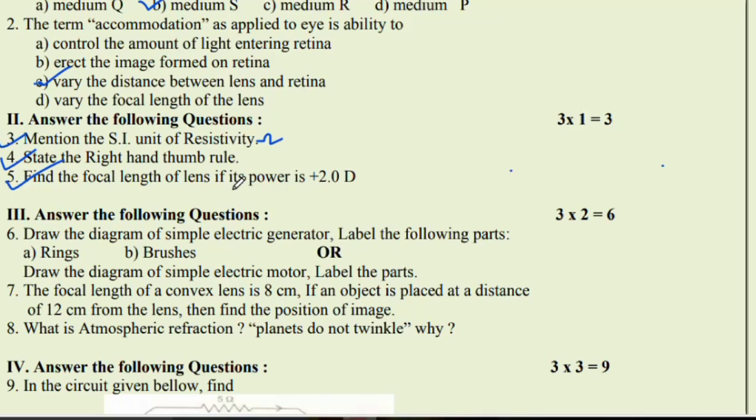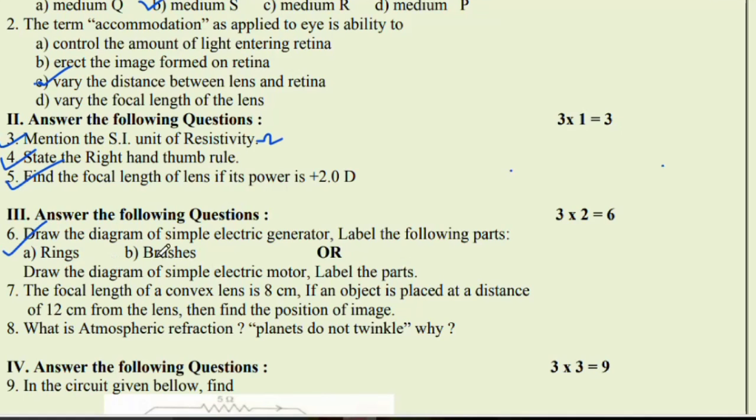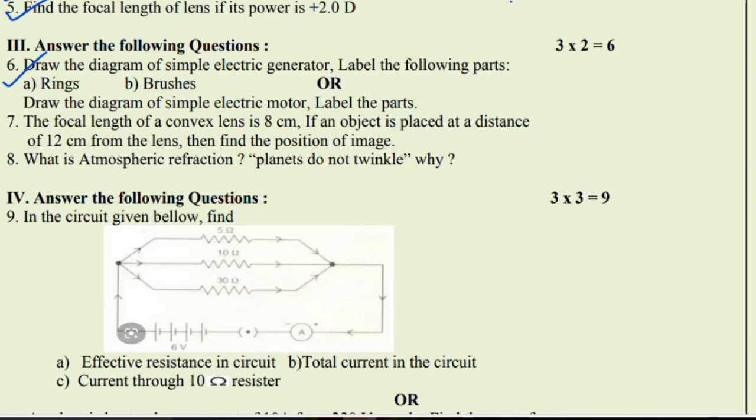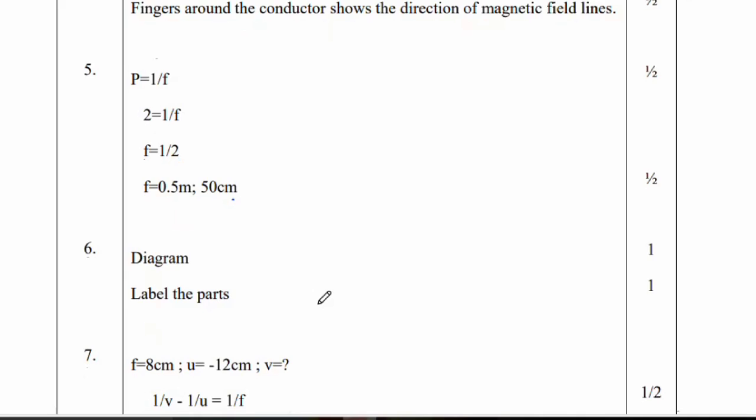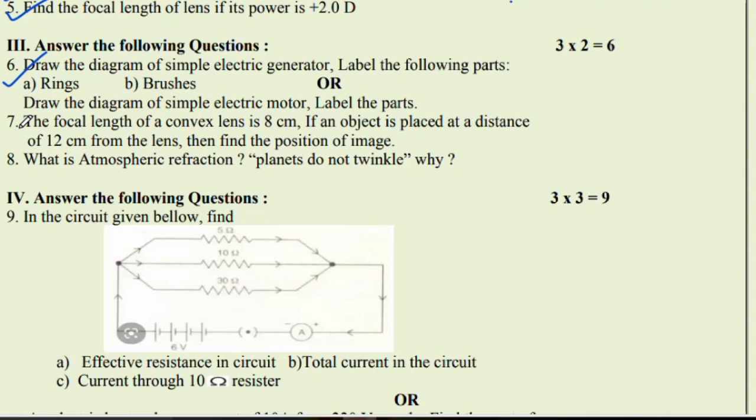Find the focal length of lens if its power is 2 diopters. We have a relation P is equal to 1 by F. So 2 is equal to 1 by F, so F is equal to 0.5 meter. Therefore 50 centimeter is the right answer. Next question number 6, draw the diagram of simple electric generator and label the following parts: brushes, rings, and armature coil.